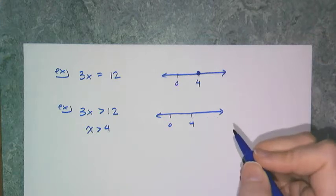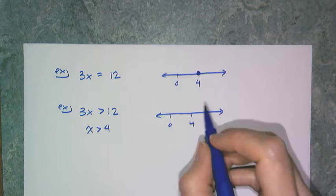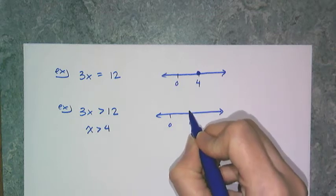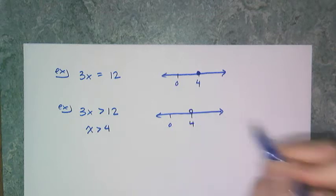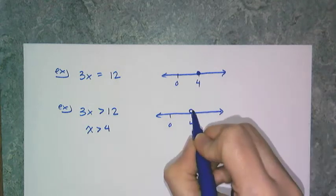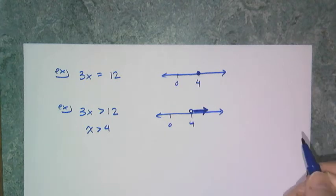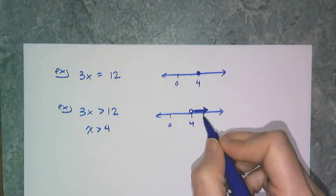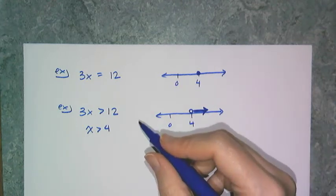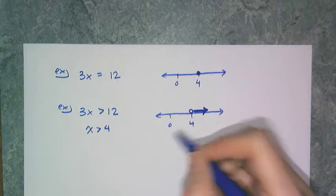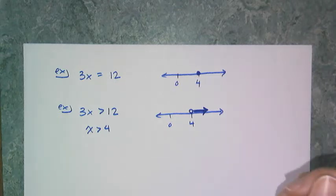In order to draw a picture of that, I have to show that the endpoint is at 4, but what I'm actually concerned with is every number greater than 4. So this is a picture of the solution set of 3x is greater than 12.